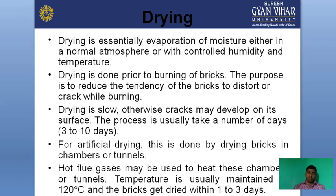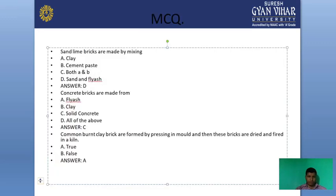After drying, we take the bricks out. Now the first MCQ question: sand-lime bricks are made by mixing — options are clay, cement paste, both, sand and fly ash. Since we are making sand-lime bricks, we mix sand with lime, so the correct answer is sand and fly ash.